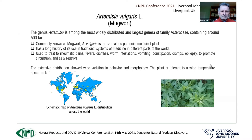Artemisia vulgaris is a perennial medicinal plant, mainly native to Europe, Asia, and North America, but it is also found in Australia and South America, including Brazil. It has a long history in traditional medicine systems in different parts of the world, and is used to treat pains, fevers, diarrhea, constipation, cramps, epilepsy, etc. Its extensive distribution shows wide variation in behavior and morphology, and the plant is tolerant to a wide temperature range but prefers moist soil.